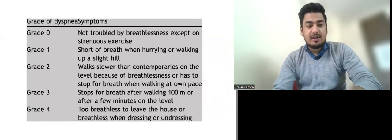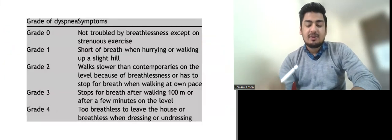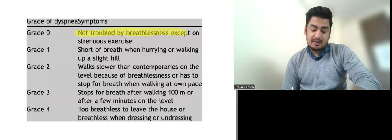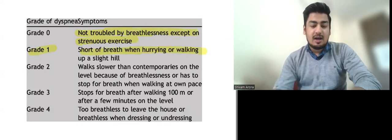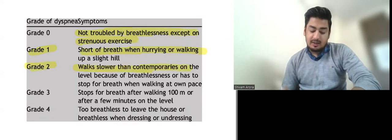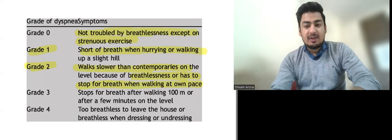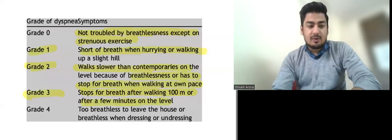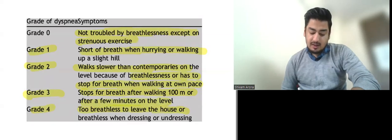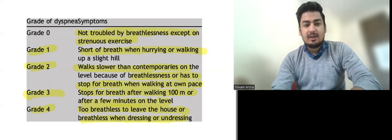This is MMRC scoring which is used for pulmonary diseases like COPD. In NYHA there are class 1 to 4 while in MMRC we have grade 0 to 4. So grade 0 means not troubled by breathlessness except on strenuous exercise. Grade 1 means shortness of breath when hurrying or walking on an uphill. Grade 2 means walk slower than your contemporaries on the level because of breathlessness or has to stop for breath when walking at own pace. Grade 3 means stop for breath after walking 100 meter or after a few minutes on a level ground. And grade 4 is too breathless to leave the house or breathless when dressing or undressing or even breathless at rest. So this is the MMRC scoring.